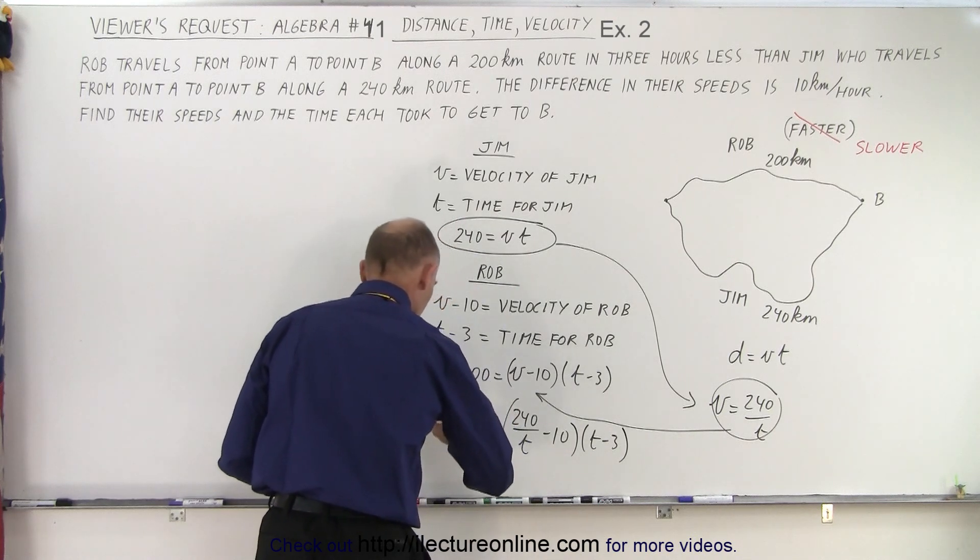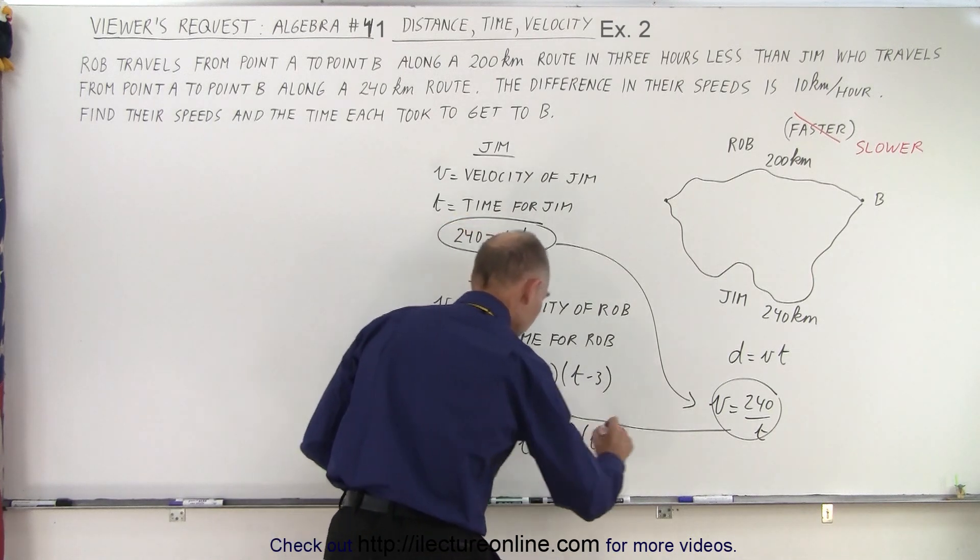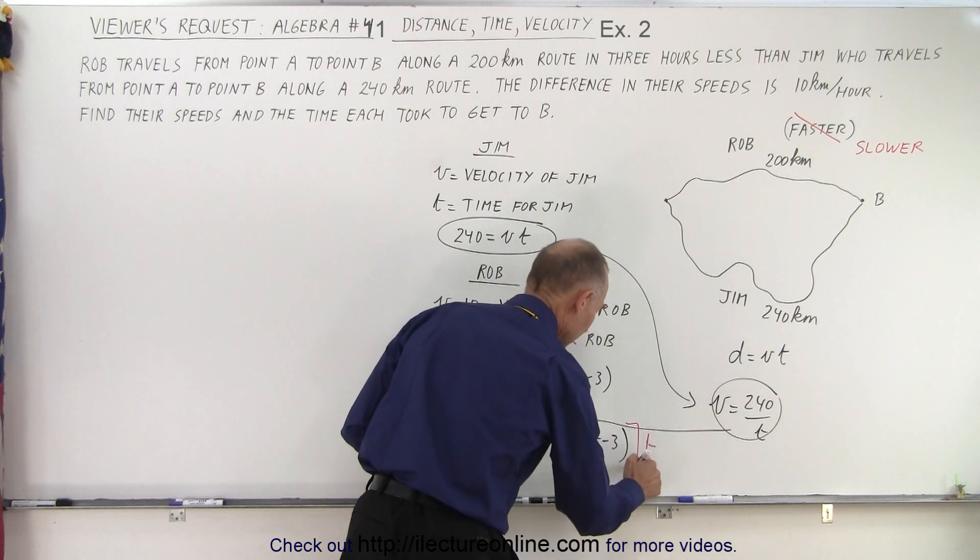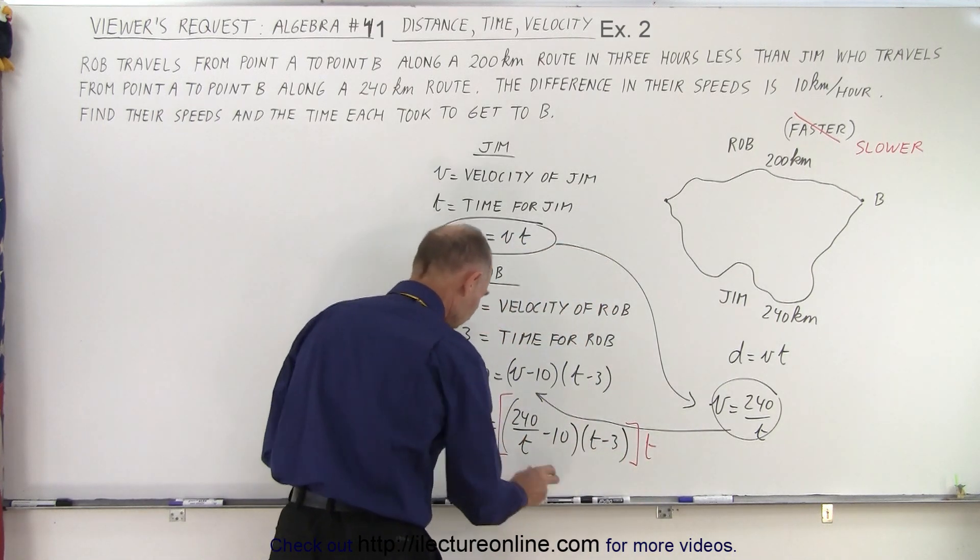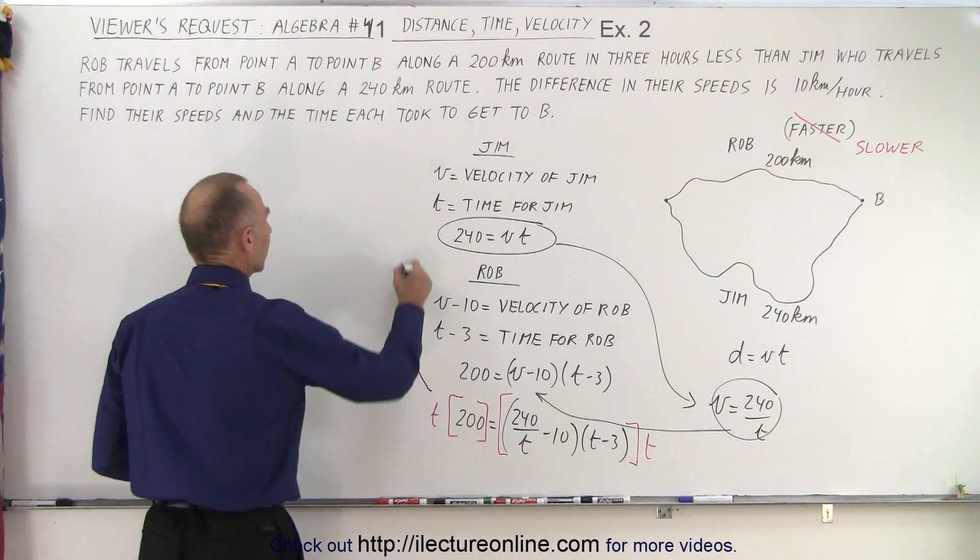And again, to get rid of T, we're going to multiply both sides by T. We don't like that T in the denominator, so multiply the left side by T and we multiply the right side by T. Remember, it can only multiply times one of the factors, not both, because it's a product. And let's see what we end up with.